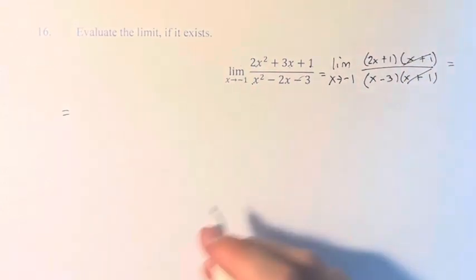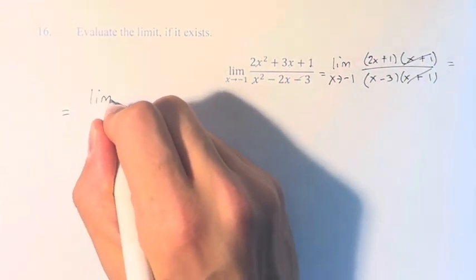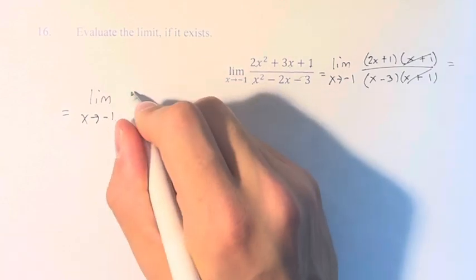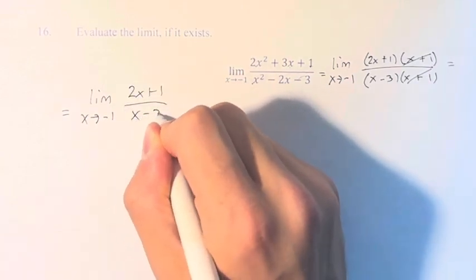Now we can eliminate these, and say that this is equal to the limit as x approaches negative 1 of 2x plus 1 over x minus 3.